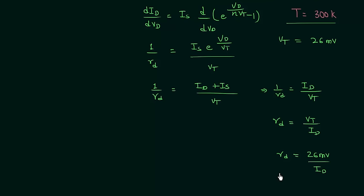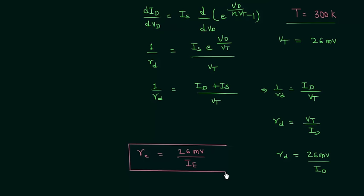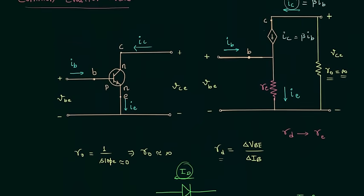Using this result, we can easily find resistance R_E. We simply change the representation: R_E = 26 mV divided by the diode current, which in common emitter configuration is the emitter current I_E. Using this formula we can calculate the dynamic emitter resistance. To do so we need to draw the DC equivalent circuit, because I_E is the DC part of the emitter current. We can then calculate I_E from the DC equivalent circuit, as we have done in previous examples.